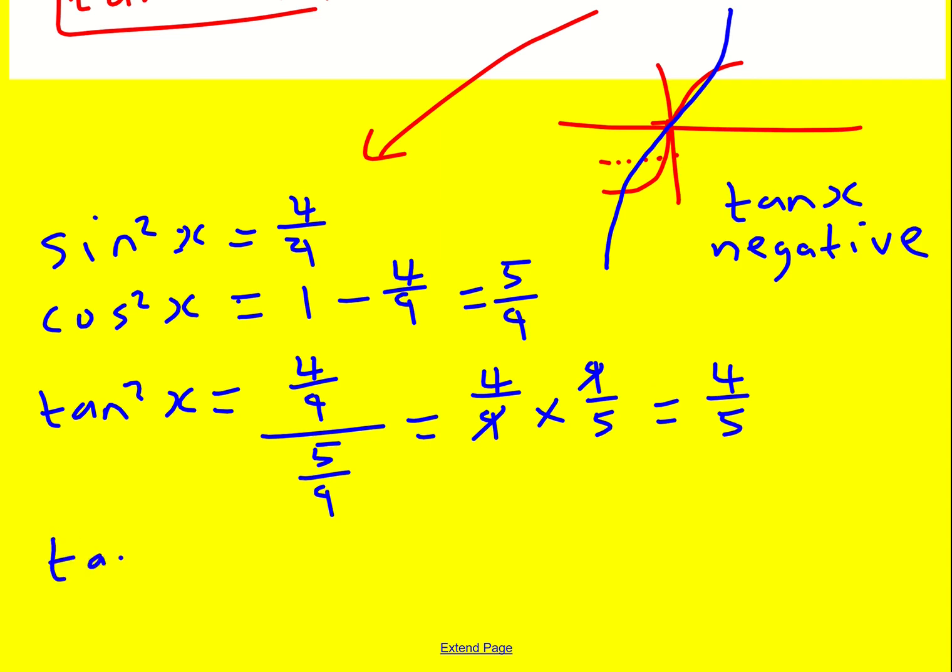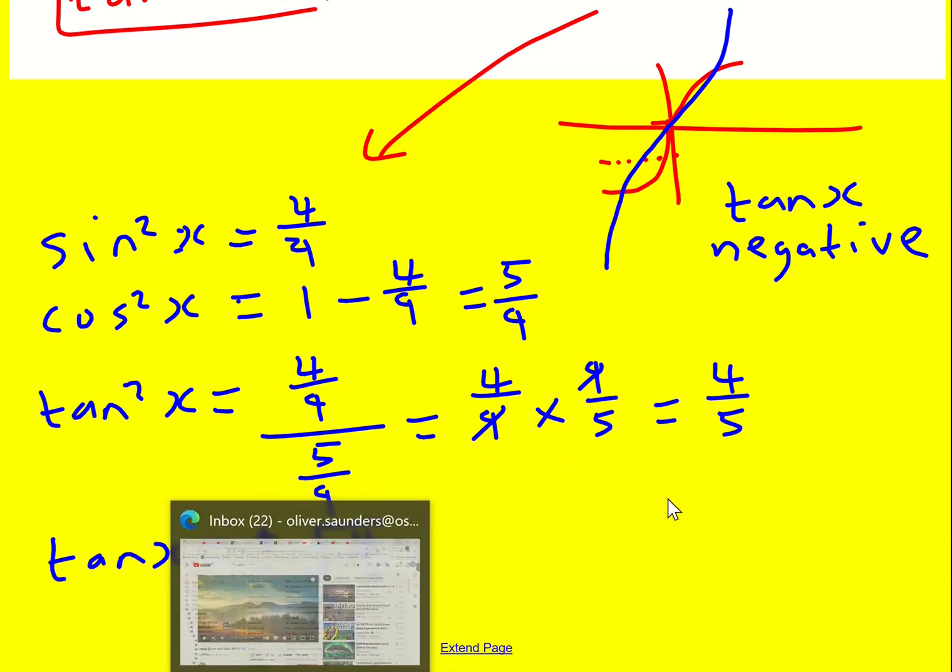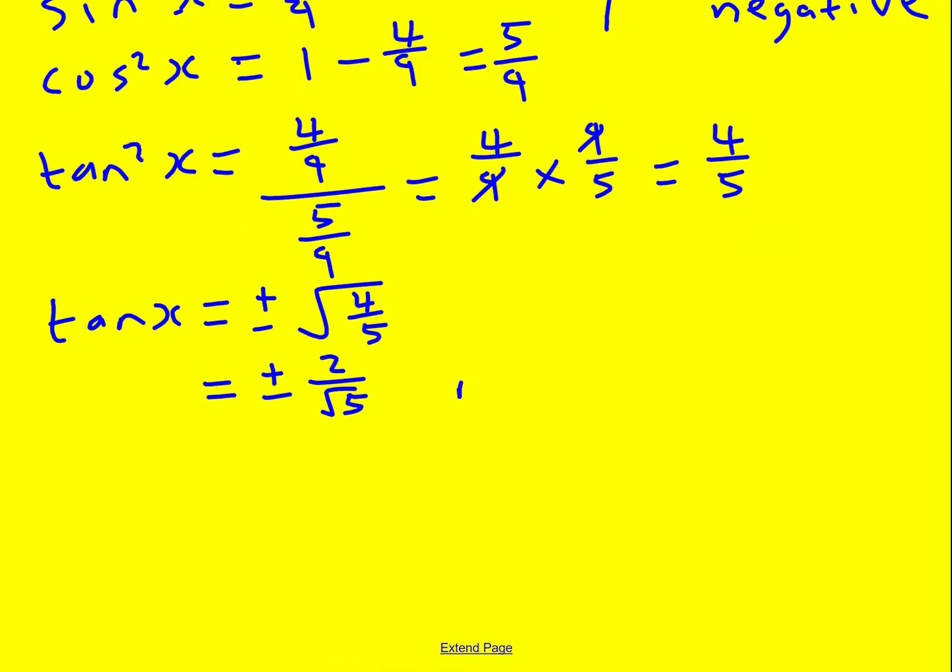This leaves me finally with tan x equals the plus or minus the square root of 4 over 5, which is plus or minus 2 over root 5. I just got to remember what I said at the start. Tan x is actually negative. So reject the positive. So my other solution is tan x equals minus 2 over root 5. Okay, we've got our two solutions and we're done.